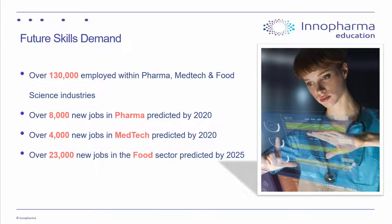Ireland has a really solid footprint with well-established global organizations, but there is a future skills demand. There are 130,000 employees in the sector, with over 8,000 new jobs predicted by 2024 and 23,000 up to 2025. Pharma is also the one sector that continued to operate and hire throughout the COVID pandemic, which underlines its resilience and the need to develop skilled employees for it.